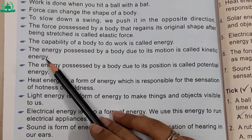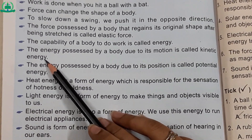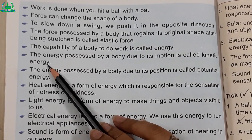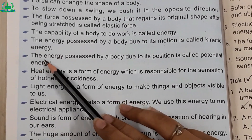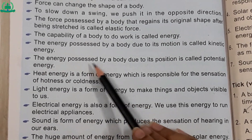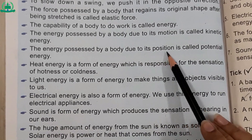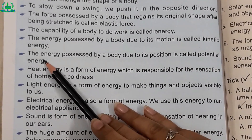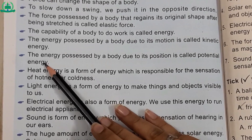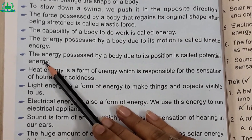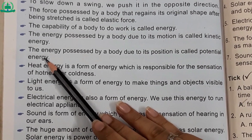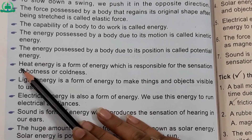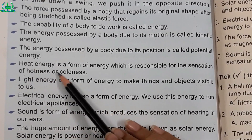Kinetic energy: (kisi body ko harakat karne ke liye jo tawanai istamal hoti hai woh kinetic energy kehlati hai.) Number ten — the energy possessed by a body due to its position is called potential energy. (Kisi body mein maujud tawanai ko potential energy kaha jata hai, isi liye isse makhfi ya chupi hui tawanai bhi kehte hain.)